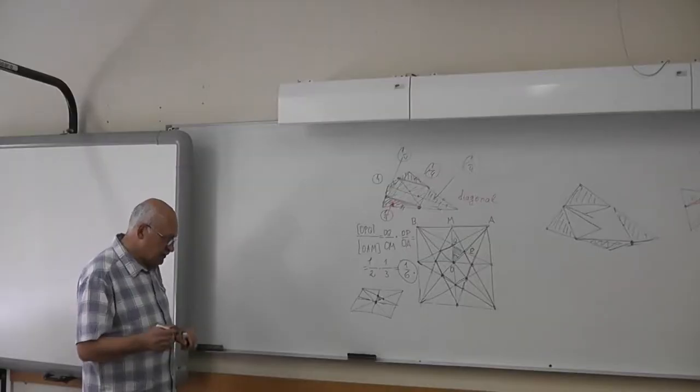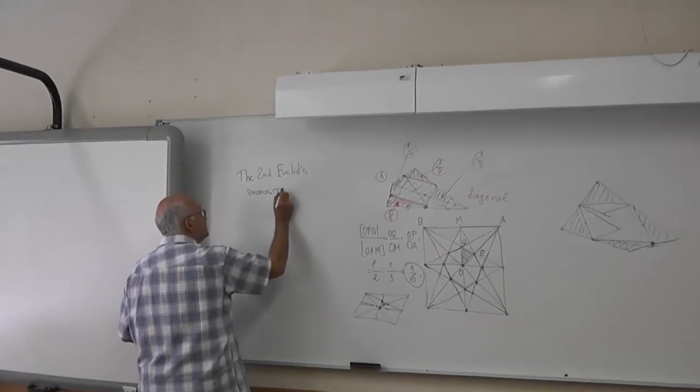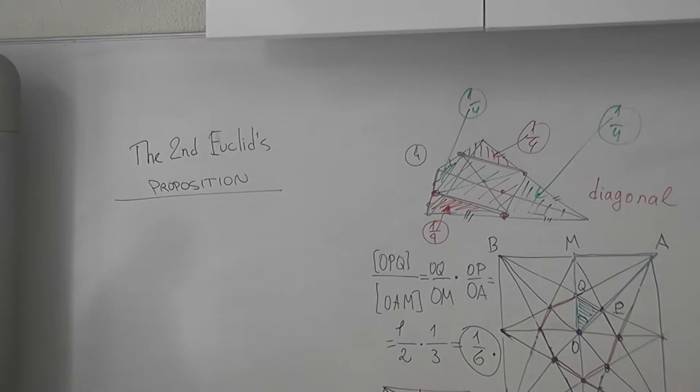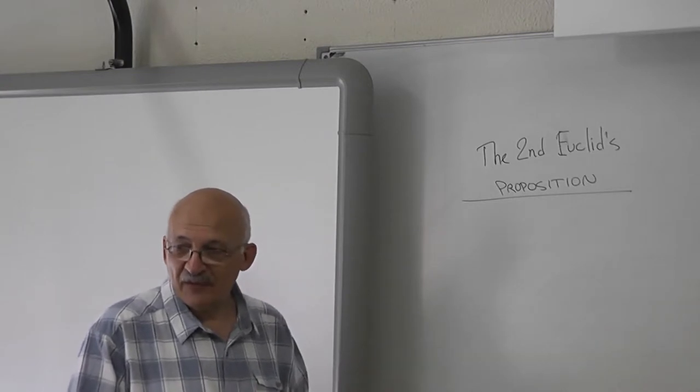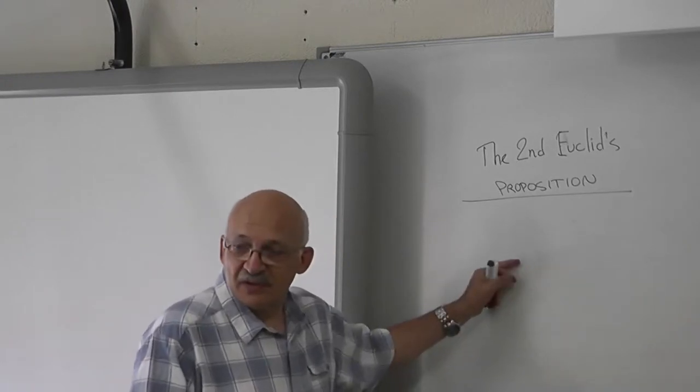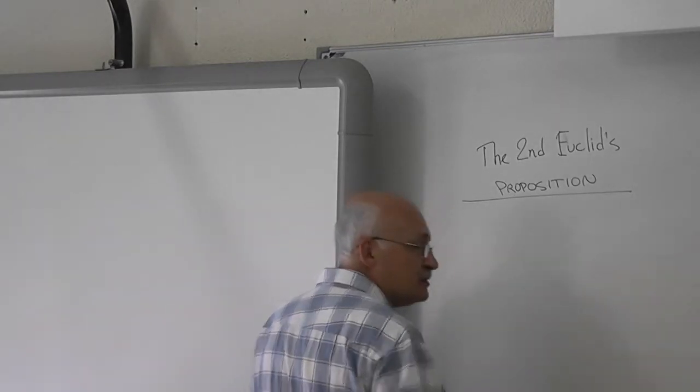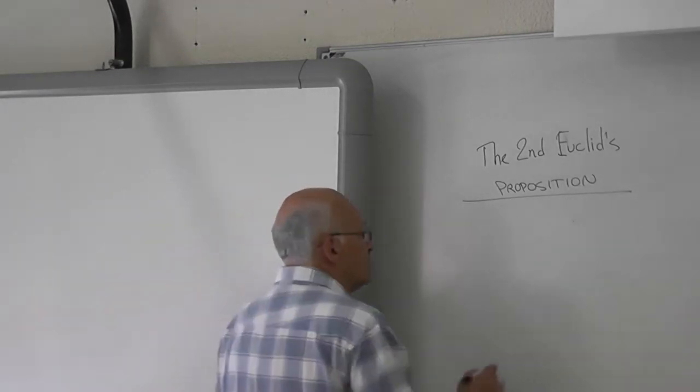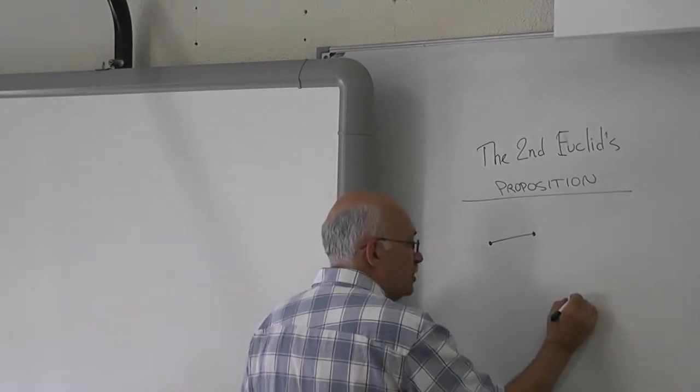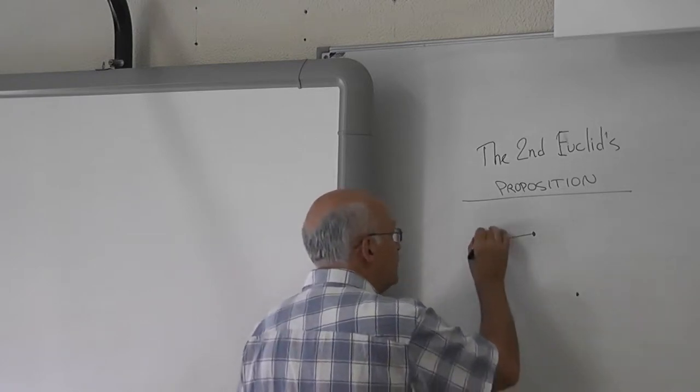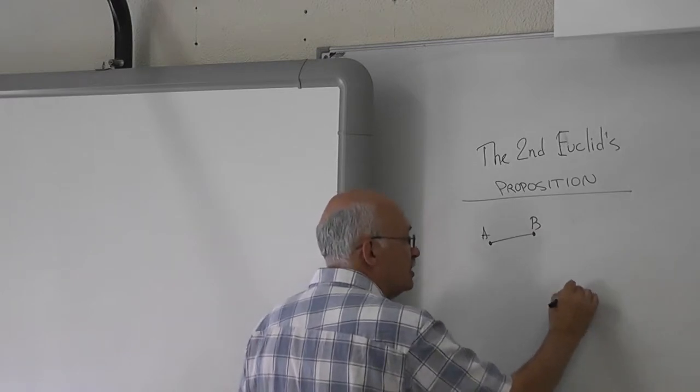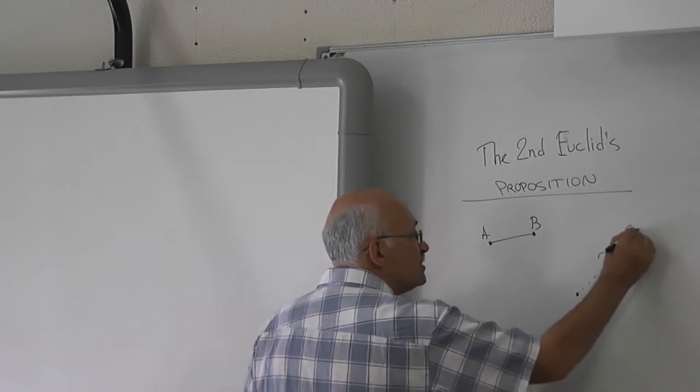The problem that I want to give to you is called the second Euclid's proposition. In Euclid's Elements, you know, the two most famous books in the history of humankind are the Bible and Euclid's Elements. So the second proposition is formulated as a problem: given a segment AB, draw an equal segment CD from the given point C.